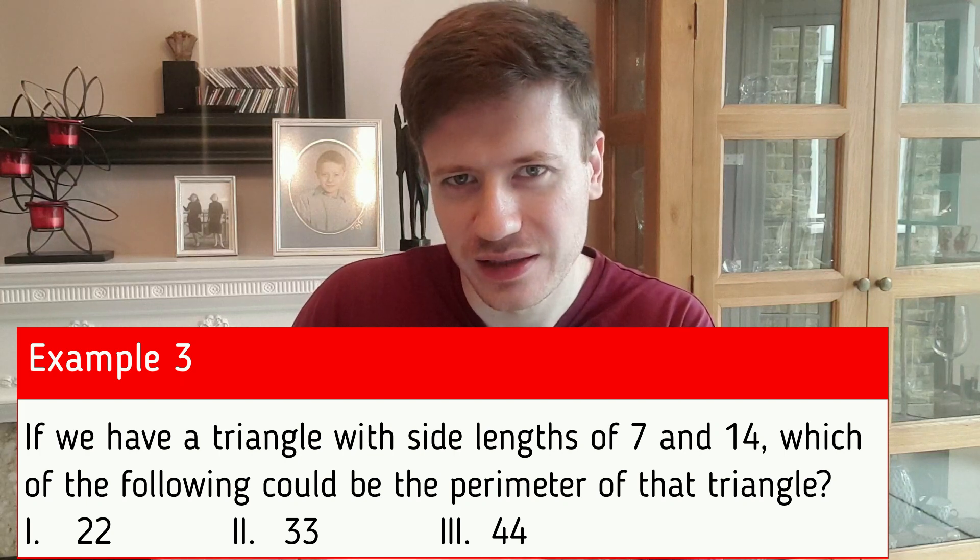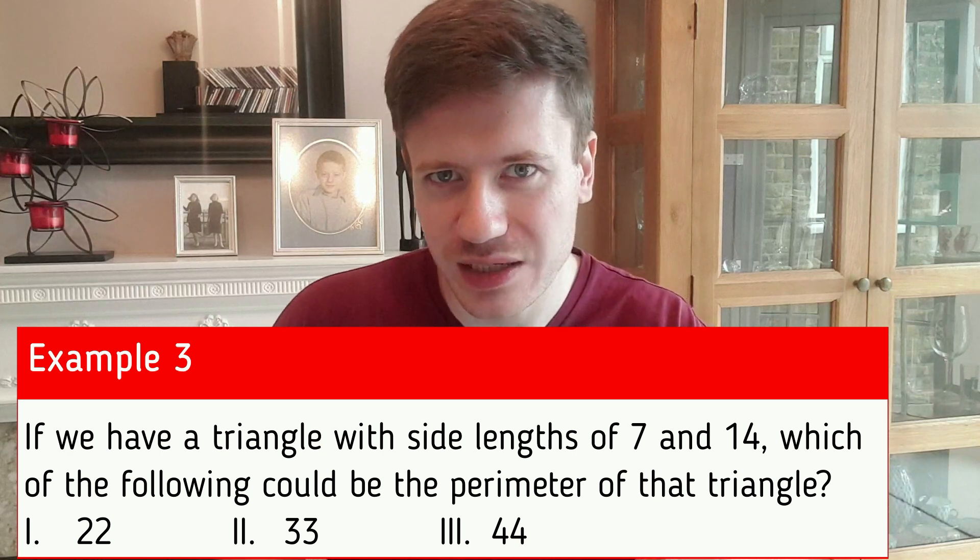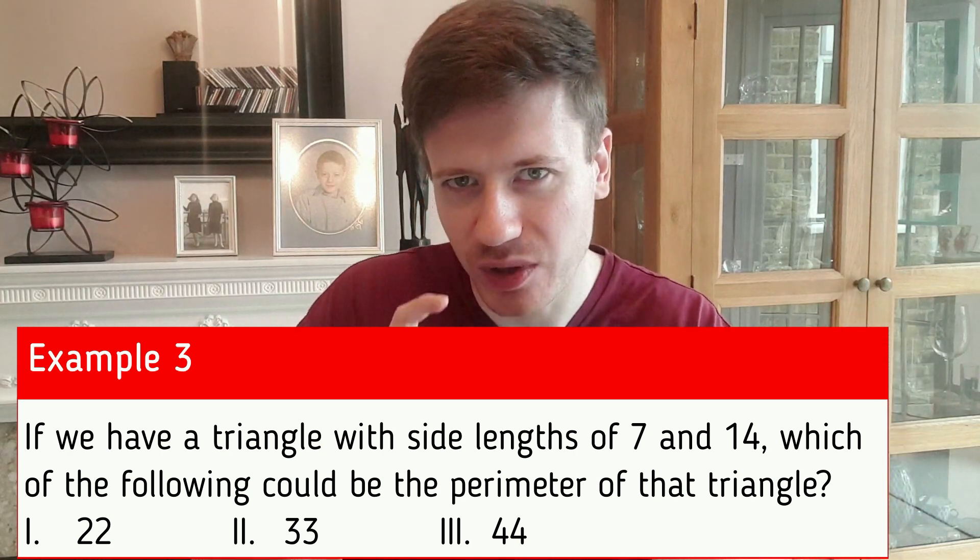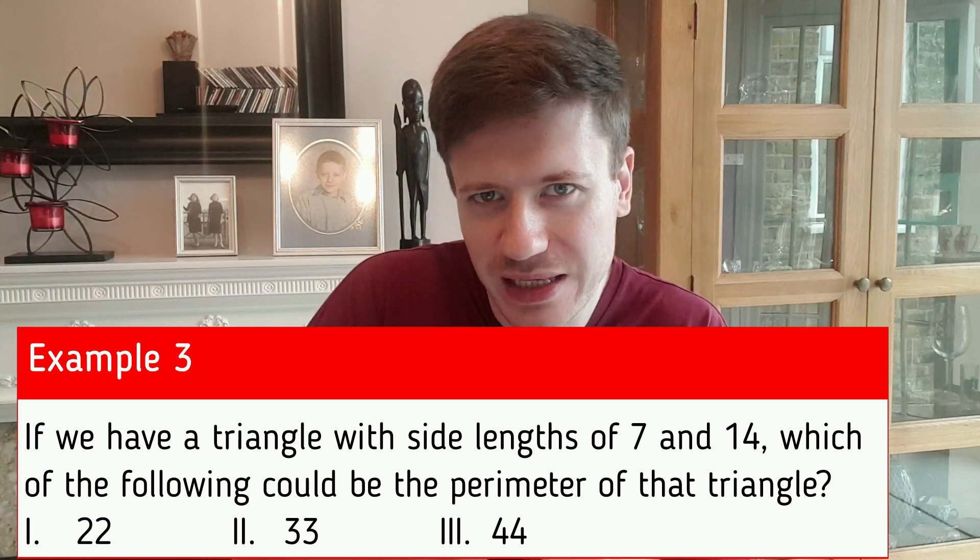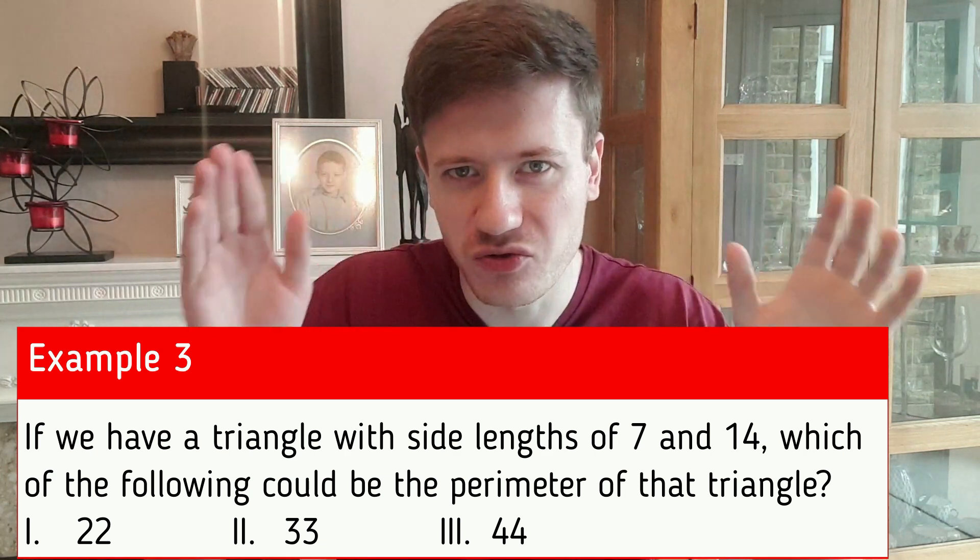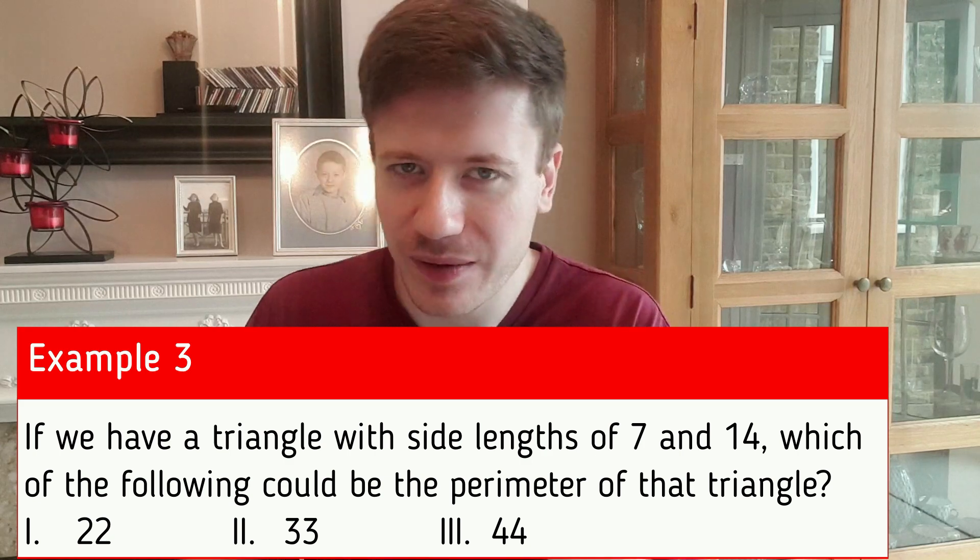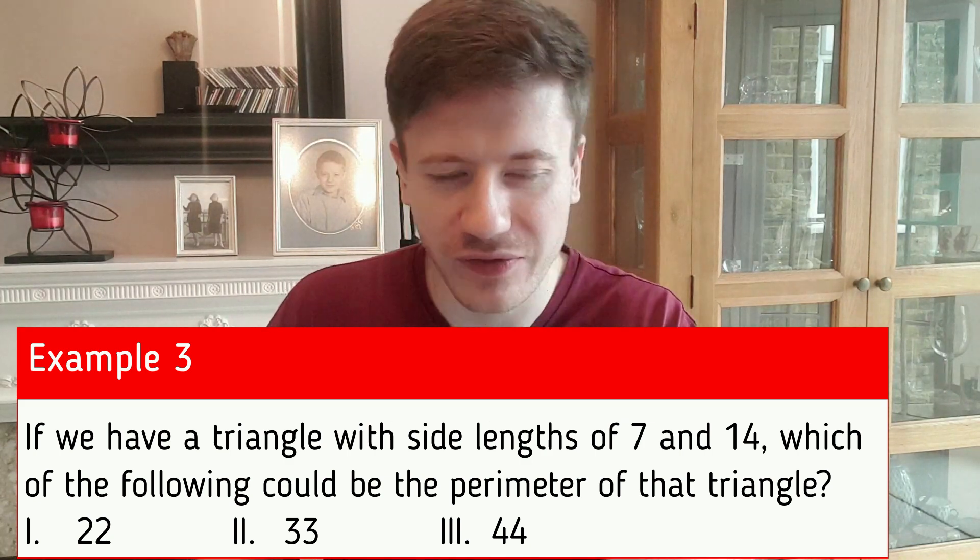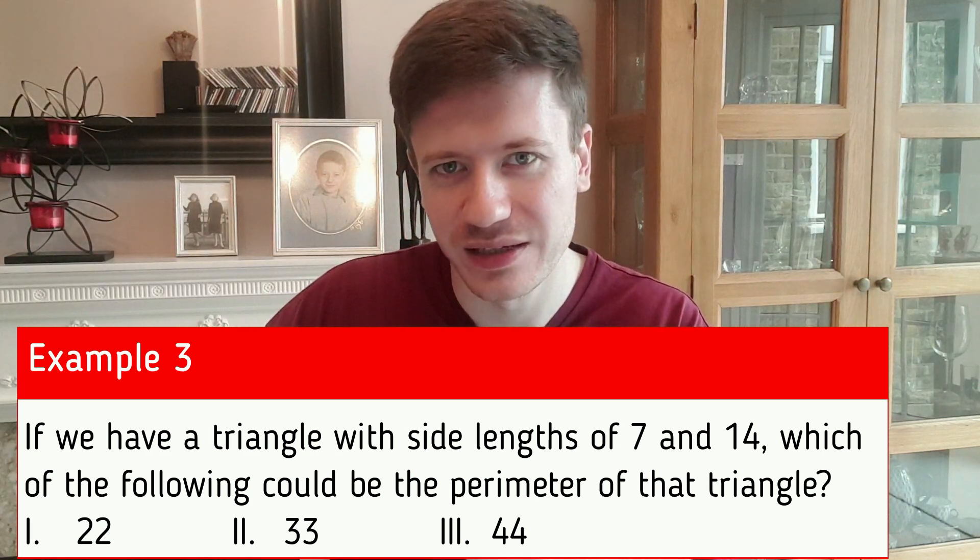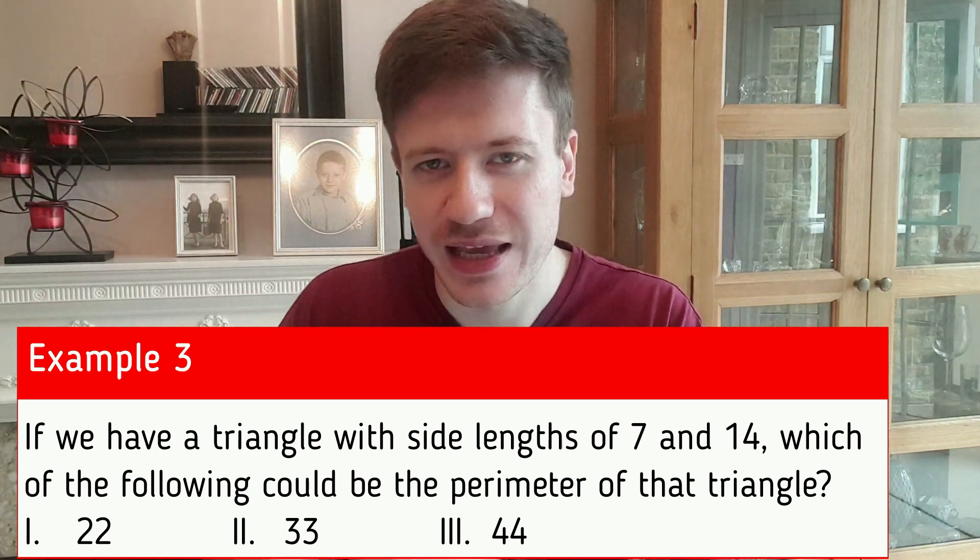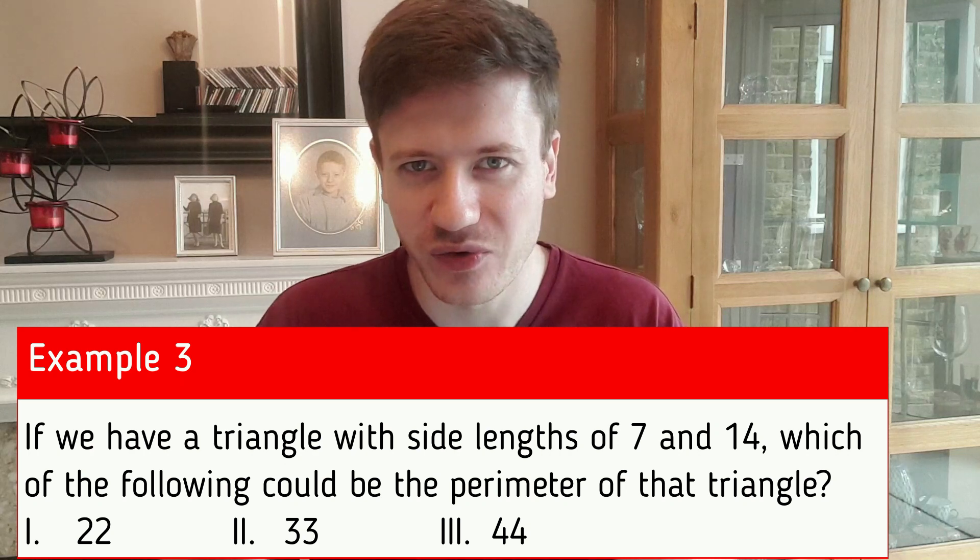So what's the range of our perimeter if the range for our third side is between 7 and 21? Well, the other two sides are 7 and 14, which add up to 21. So our lower limit is 21 plus 7, which is 28, so the perimeter has to be greater than 28. Our upper limit for the third side was 21, so again, adding up the other two sides, 7 and 14, that's 21 plus 21, that's 42. So the upper limit for the perimeter is 42. It has to be between 28 and 42, not including either 28 or 42. Only 33 is in that range, so only 33 could be the perimeter of our triangle.